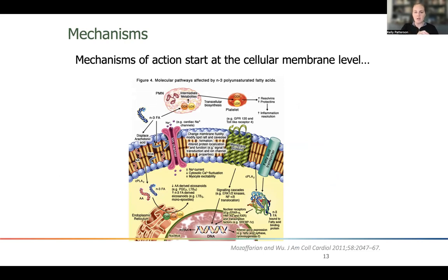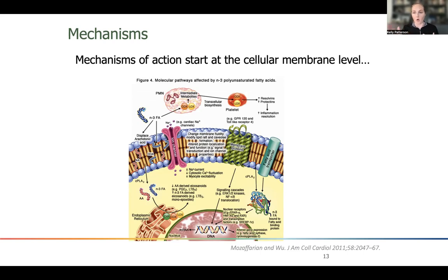EPA and DHA are incorporated into the cell membranes in our tissues as well as red blood cells. When our cell membranes are more fluid, they're less likely to be damaged. We want fluid, healthy cell membranes, and having enough EPA and DHA embedded into those cell membranes is really important. There are a whole host of other mechanisms covered in other presentations on our YouTube channel.